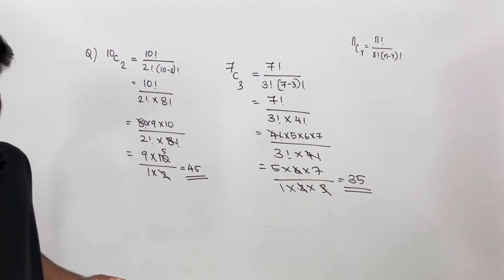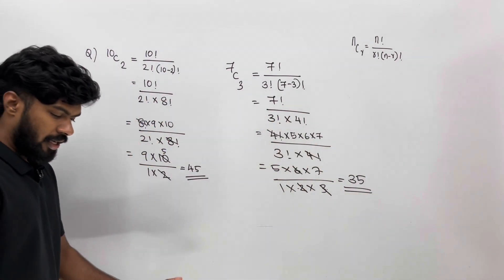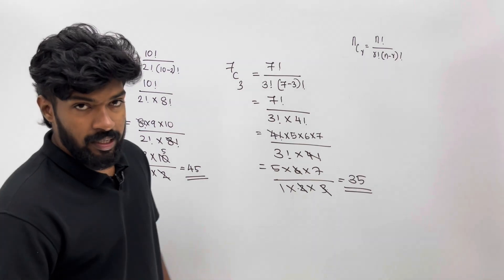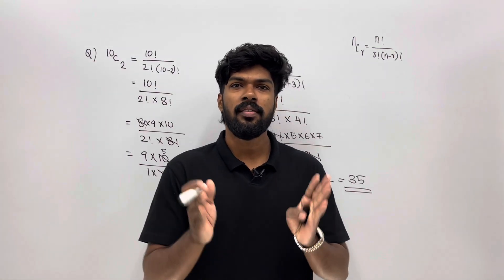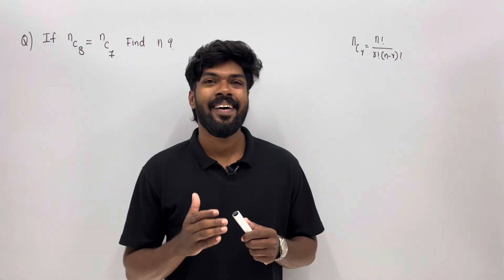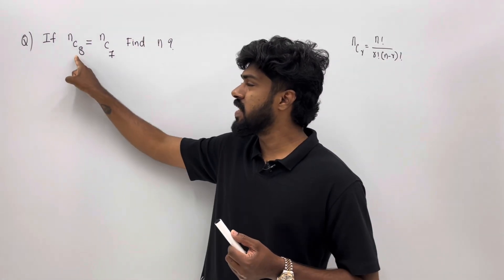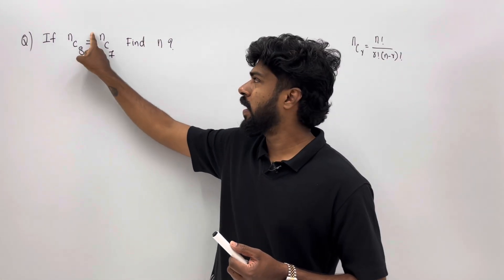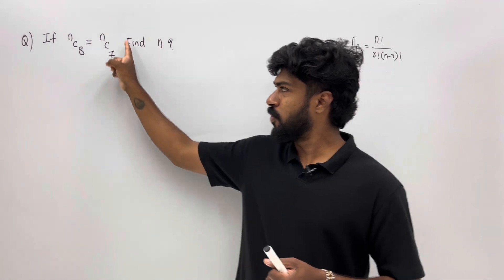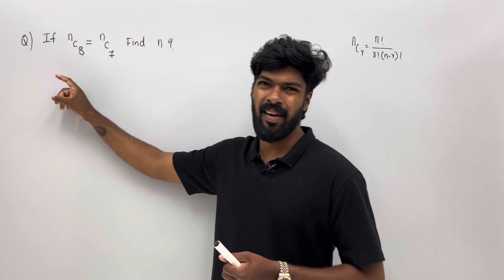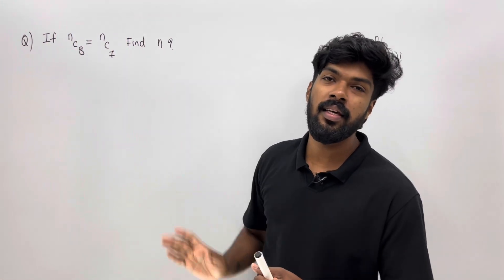This is a basic question. Let's try this model: if nC8 equals nC7, find n. If you try this model, it will be equal to two combinations.